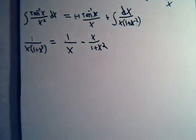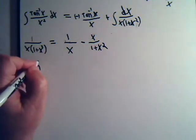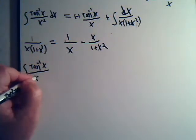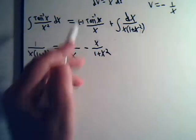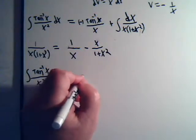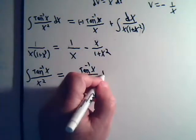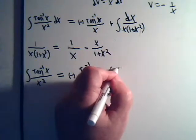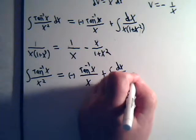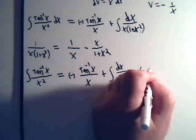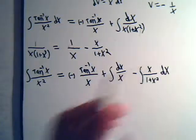Now, this integral here. Inverse tangent of x divided by x squared will equal minus inverse tangent of x divided by x plus the integral of dx over x minus the integral of x divided by 1 plus x squared dx.